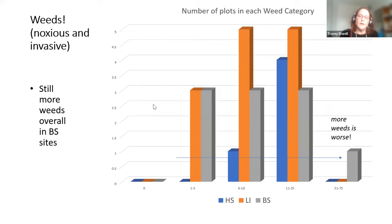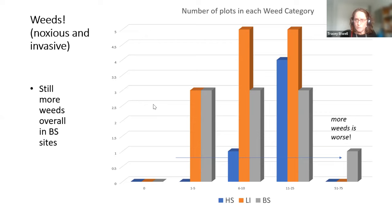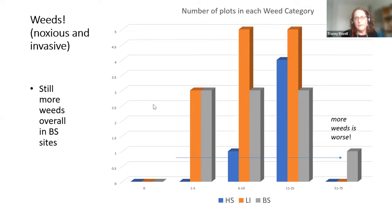This graph shows weed frequency across plot categories, where moving right indicates heavier weed pressure. Counterintuitively, boom-sprayed sites — which are actively sprayed for weeds — don't show lower weed cover. We think native species in low-intensity sites are actually suppressing weeds. The biggest weed problem in this area is wild parsnip; the spray sometimes hits it, sometimes doesn't, and there's a large seed bank in the soil, making it an ongoing challenge.